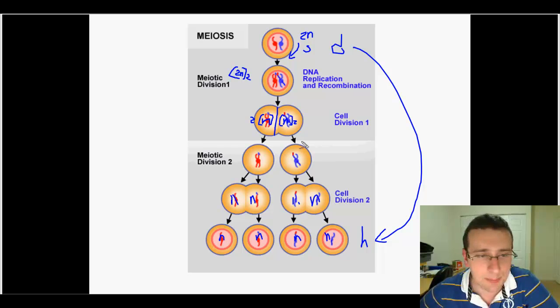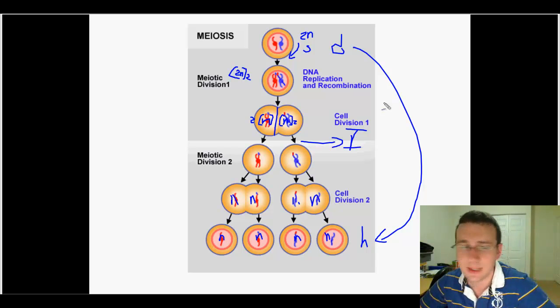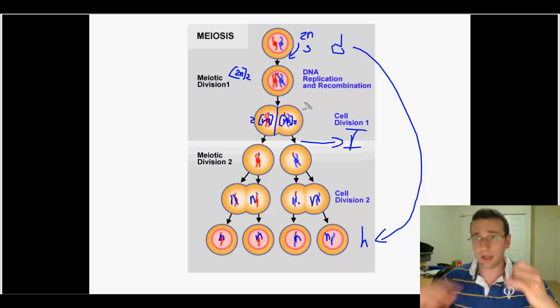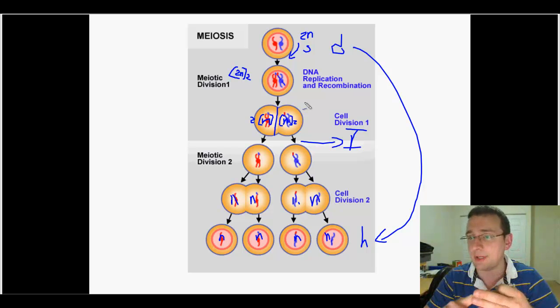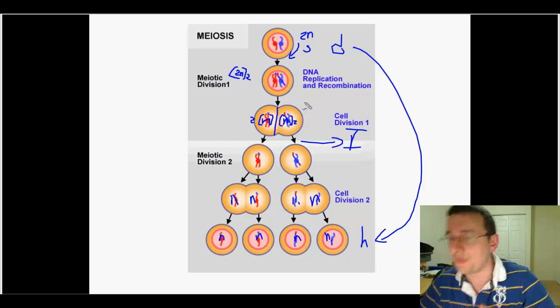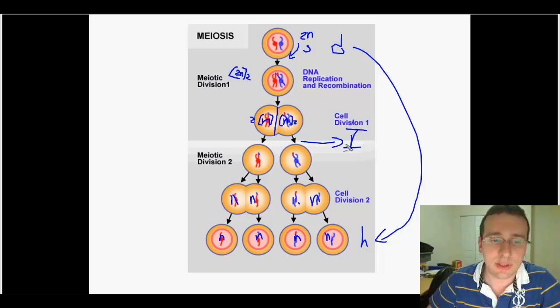Basically that happens because between the divisions here, there is no interphase. So interphase usually happens at the end after telophase. But in this case, you go prophase, metaphase, anaphase, telophase, prophase again. And so since there is no interphase, there is no S phase. And since there's no S phase, there's no synthesis.